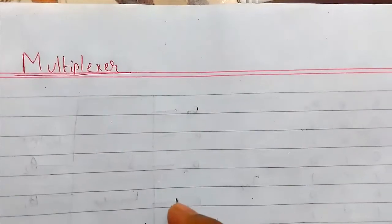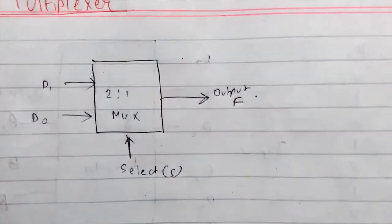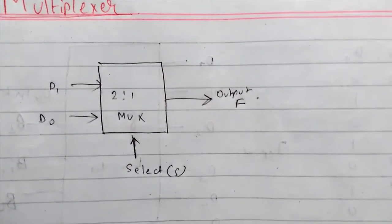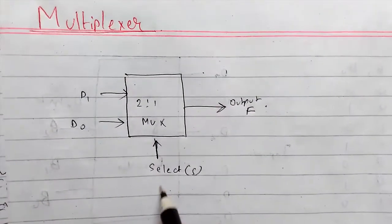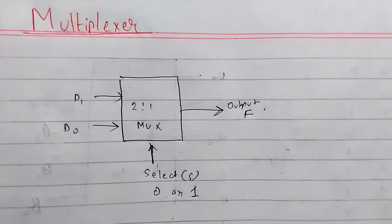This is a 2 to 1 multiplexer. It has two inputs D0 and D1, one select input S, and output F. The switch connects the output to one of the inputs depending on the select input. The value of select input is either 0 or 1, so there are two possible ways for connecting it.